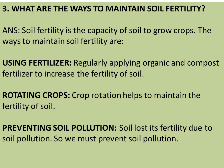Number 3: What are the ways to maintain soil fertility? Answer: Soil fertility is the capacity of soil to grow crops. The ways to maintain soil fertility are: using fertilizer — regularly applying organic and compost fertilizer to increase the fertility of soil; rotating crops — crop rotation helps to maintain the fertility of soil; and preventing soil pollution — soil loses its fertility due to soil pollution, so we must prevent soil pollution.